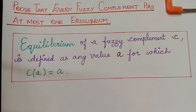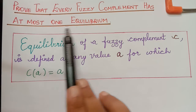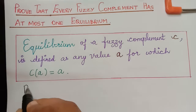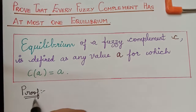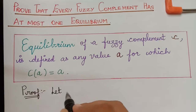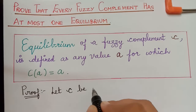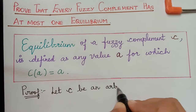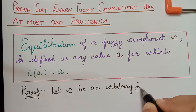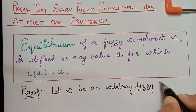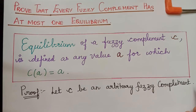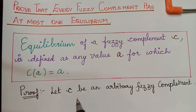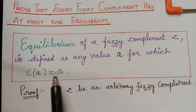Now we shall prove that every fuzzy complement has at most one equilibrium. Let C be an arbitrary fuzzy complement. An equilibrium of C is the solution of the equation C of A equal to A.